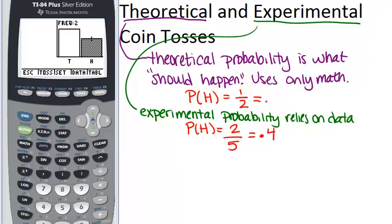One half, remember, is 0.5. So notice that the theoretical and experimental probabilities were different, although they were pretty close.